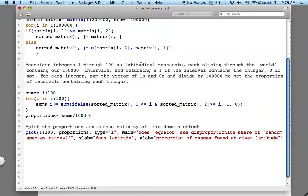Okay, this is what I said in the other part, that we're considering the integers 1 through 100 are going to be basically like latitudinal transects that slice through our little world containing our 100,000 intervals. And what I want R to do is give me a 1 if the transect smacks into an interval, and 0 if it doesn't. and so then, if I loop that through the entire matrix, I should be able to sum that vector and divide by 100,000 and get the proportion of intervals that contained that integer.